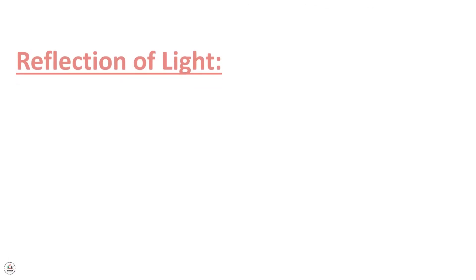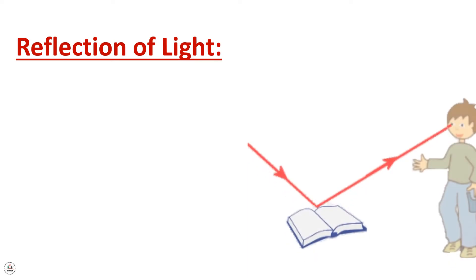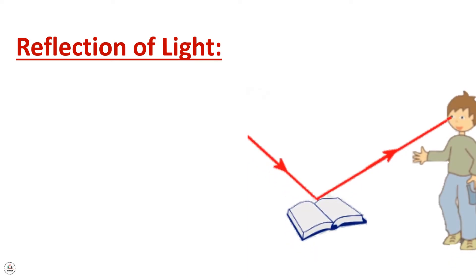By referring to the Engage and Explore section, we talked about three different types of media: transparent, translucent, and opaque. In an opaque medium, objects don't allow light to pass through them. For this reason, the light will be reflected. So, what is the reflection of light?